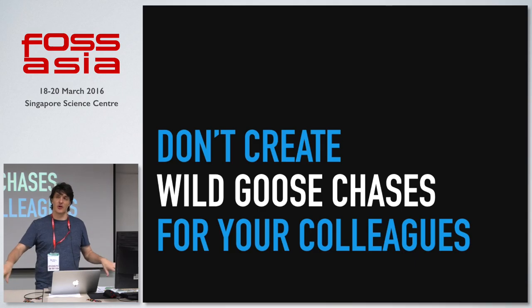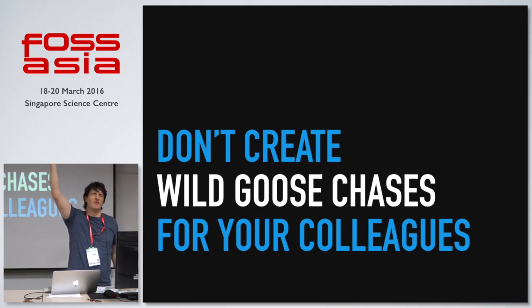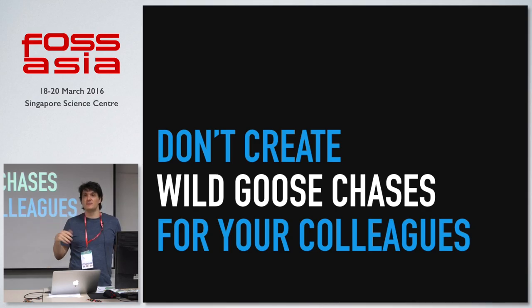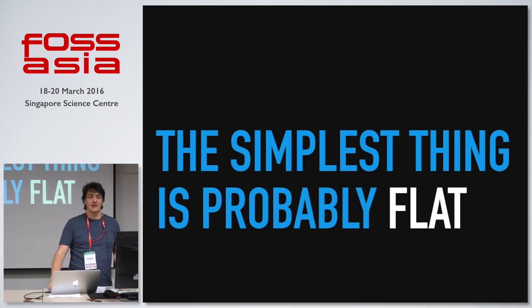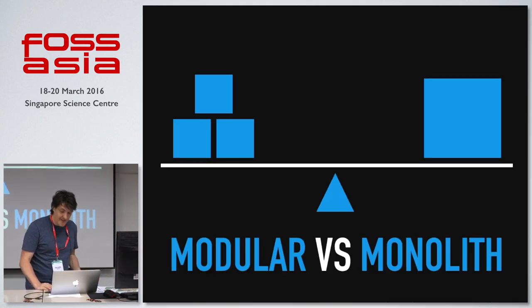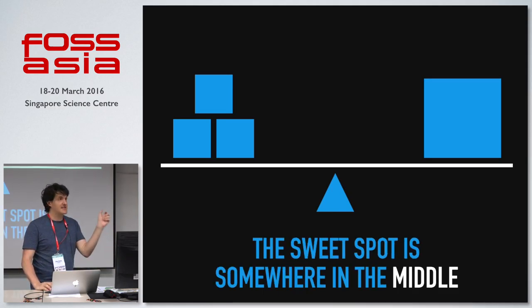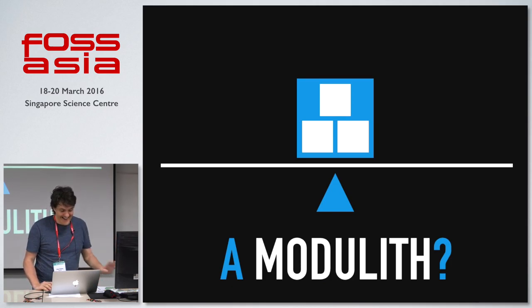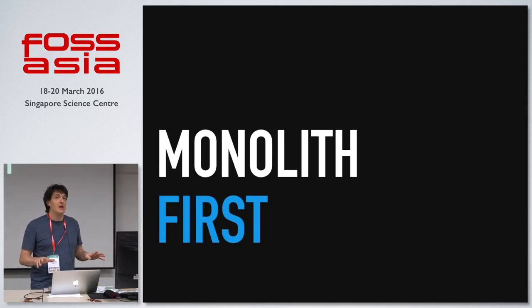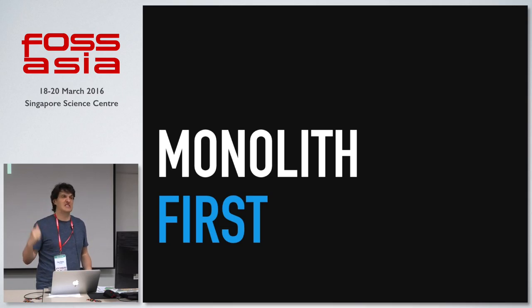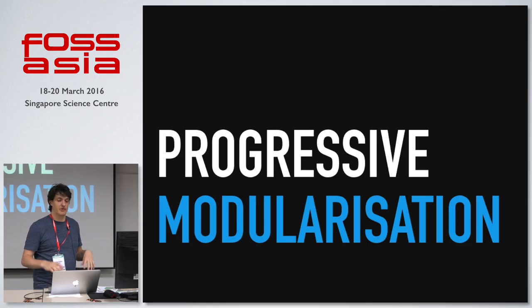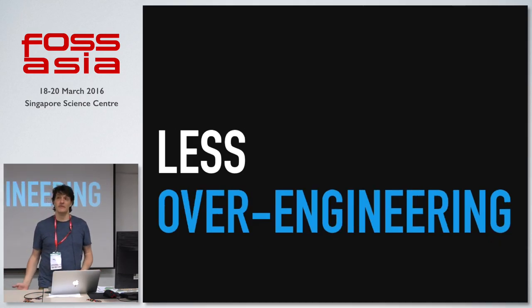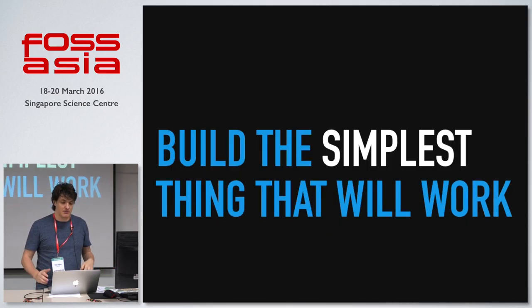You should try to avoid creating wild goose chases for your colleagues — we've all tried to debug problems where the thing goes into this thing and then that thing, and comes back around. These things are often created by people designing overly complicated solutions. The simplest thing is probably flat. The sweet spot is probably somewhere between modular and monolith — maybe it's called a 'modolith,' it's a pretty stupid name. Usually the best plan is to go monolith first — prototype your ideas first and then progressively modularize out as you need to, but only when you need to. Doing this progressive modularization should help you do less over-engineering and build the simplest thing that will work.